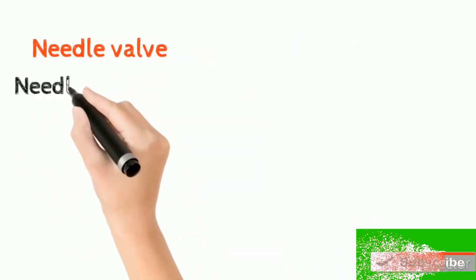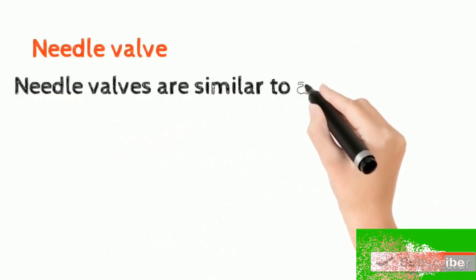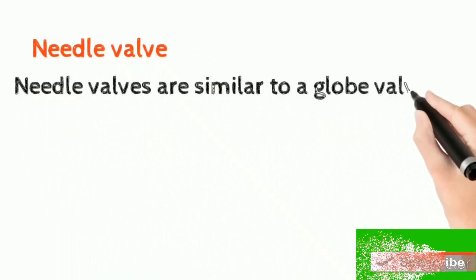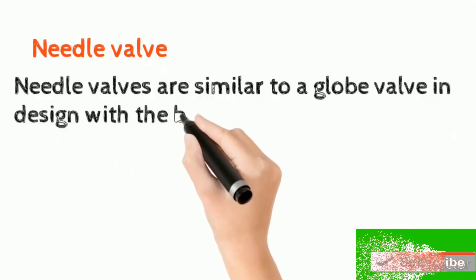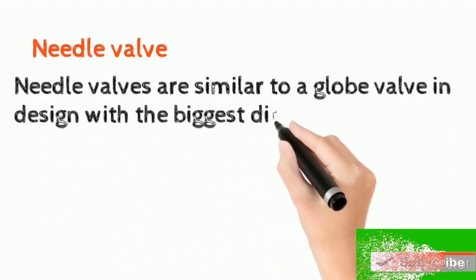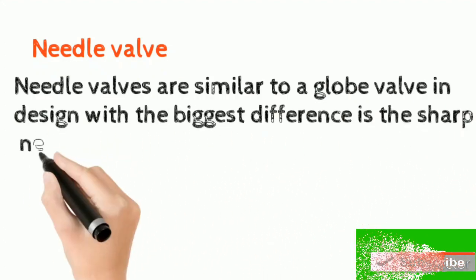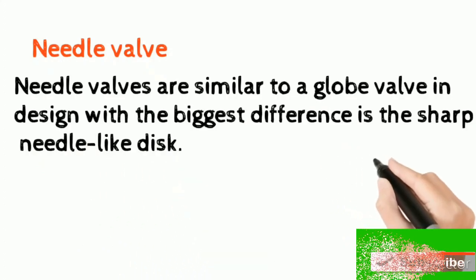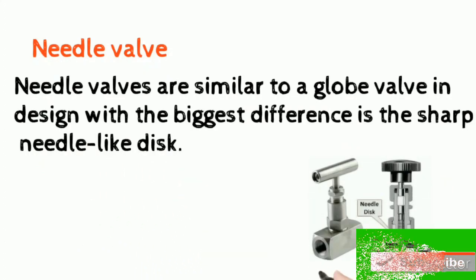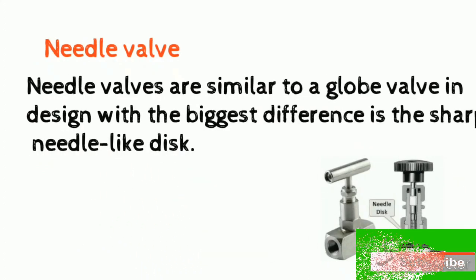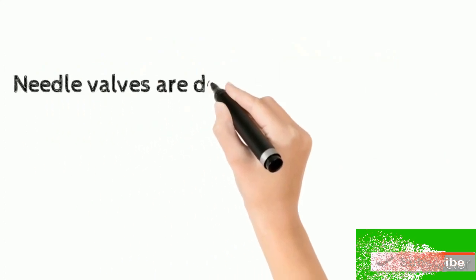Needle valves are similar to a globe valve in design, with the biggest difference being the needle-like disc. Needle valves are designed to give very accurate control of flow in small diameter piping systems. They get their name from their sharp-pointed conical disc and matching seat.